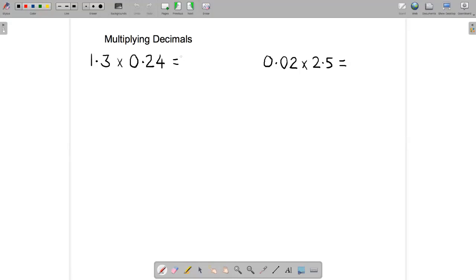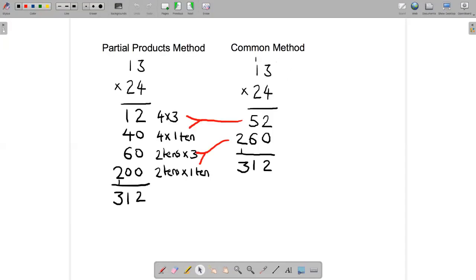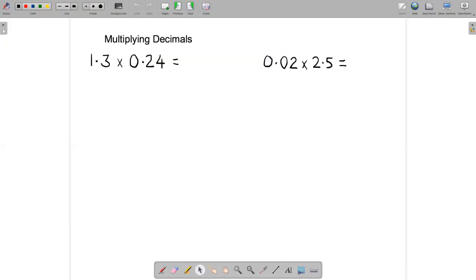Typically the way you would start this problem is to turn these into whole numbers, so 13 and 24, and multiply those together and then figure out where to put the decimal point. So we already did 13 times 24 in the previous example and it comes to 312. So we've done that part of the problem, so let's write down 312.